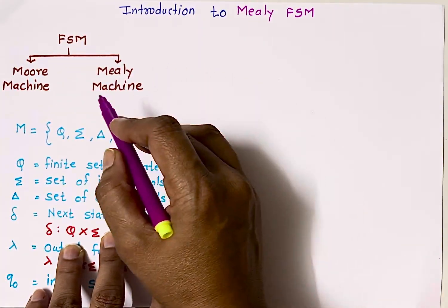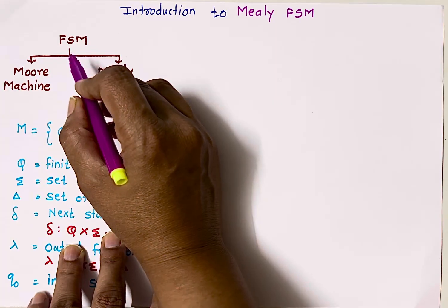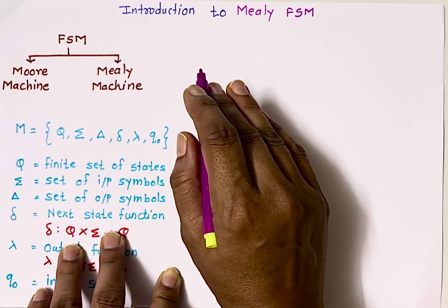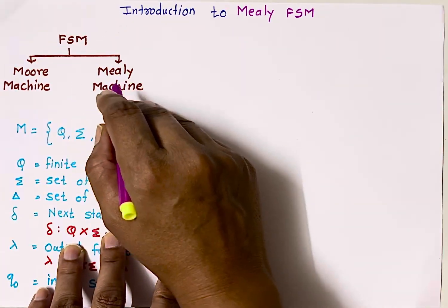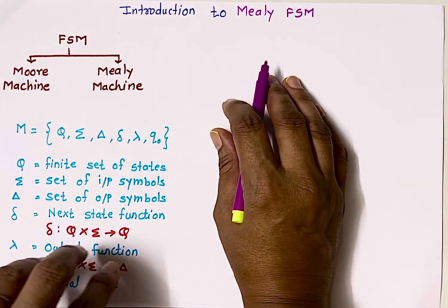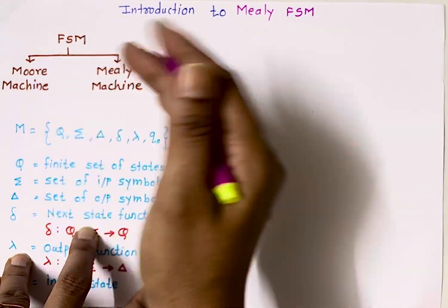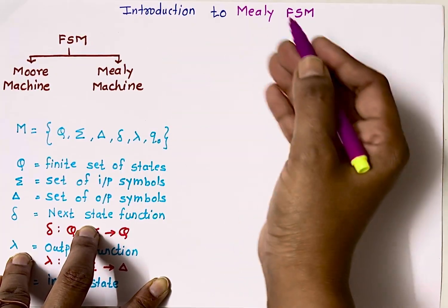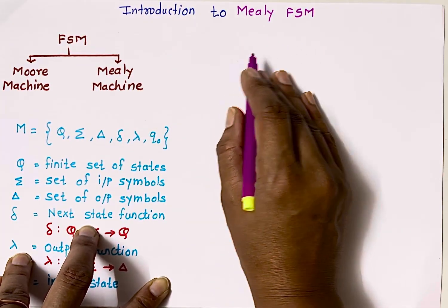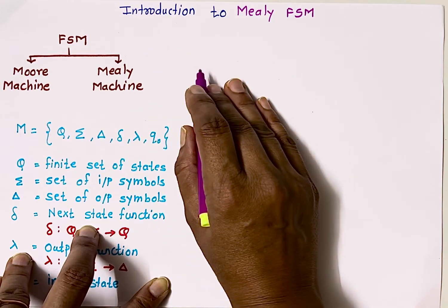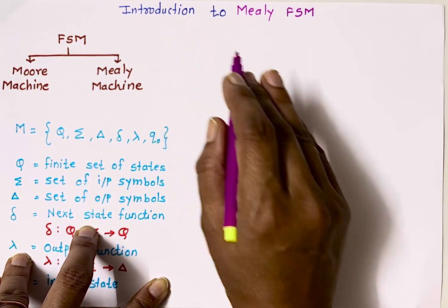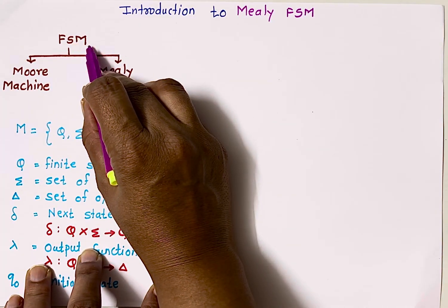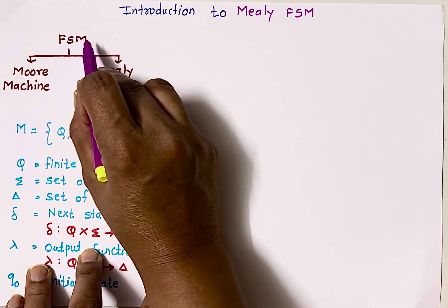Let's quickly recall what an FSM is. A finite state machine is a sequential logic circuit that changes its state based on input and current state. Digital circuits are broadly classified into two parts: combinational circuits where output depends on present inputs only, and sequential circuits where output depends on present input as well as the past state of the flip-flops. FSM is nothing but a sequential circuit, meaning they have memory elements present in them.